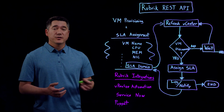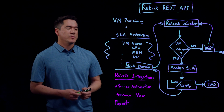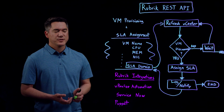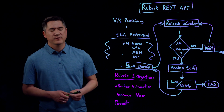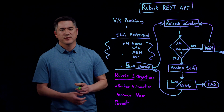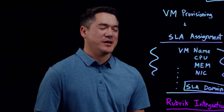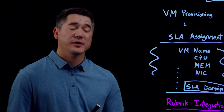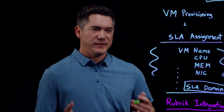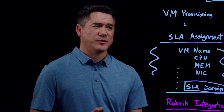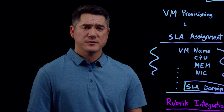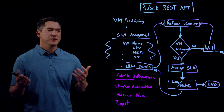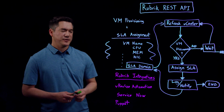Rubrik has pre-written integration modules today with vRealize Automation and Orchestration, ServiceNow, and config management tools such as Puppet. With vRealize Automation, you're going to get very VMware-specific workflows such as this and many others around more complex VMware items as well, such as migration and instant recovery.